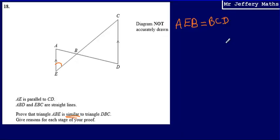So those angles are equal to each other, and the reason for that is because we have parallel lines. We've got AEB and angle BCD, and they are alternate angles. So our reason that they are the same is that they are alternate angles.